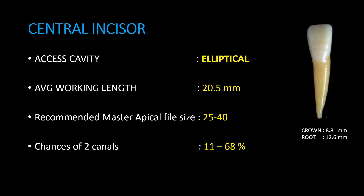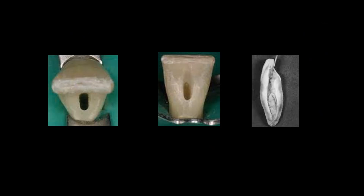Access cavity is elliptical shaped. Average working length is 20.5 mm. Recommended master apical file size is 25–40. Chances of two canals is 11–68%. Here, a pic shows elliptical shaped access cavity preparation and radiograph of mandibular central incisor is shown.